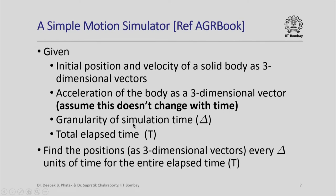In this lecture we are going to use the same V3 structure we already studied and try to solve a simple problem. The problem is a motion simulator, inspired by examples and discussions in the AGR book. We will be given the initial position and velocity of a solid body as three-dimensional vectors. We are also given the acceleration of the body as a three-dimensional vector, and we will assume for simplicity that this acceleration does not change with time.